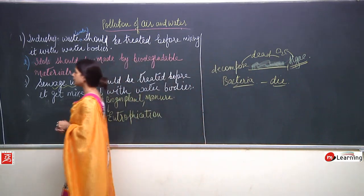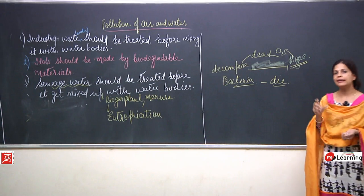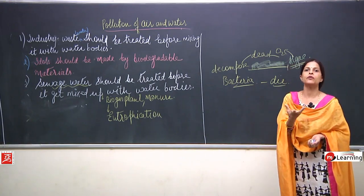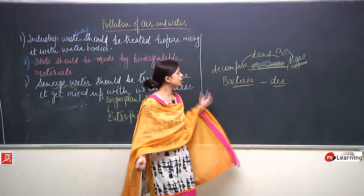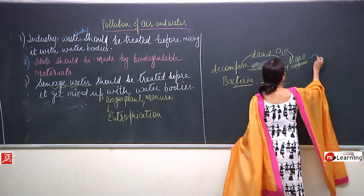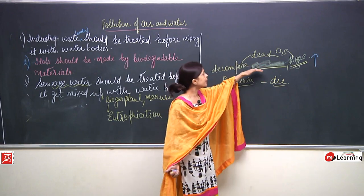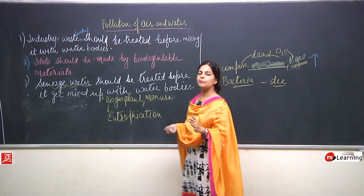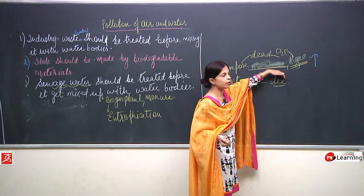Let me explain eutrophication clearly. When sewage water or any water containing substances good for plant growth is released into water bodies, it increases the growth of algae. The algae growth increases so much that the entire water surface gets covered by algae. Now, algae blocks the passage of oxygen — oxygen cannot readily dissolve into the water.